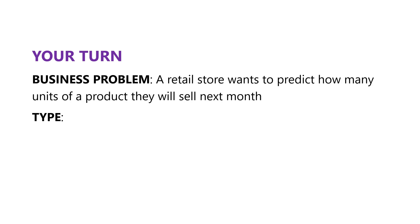Next example: a retail store wants to predict how many units of a product they'll sell next month. What type of problem is this? This will be a regression type of problem because the output — which is product demand — is going to be a continuous numerical value. It could be 10, it could be 1000, somewhere on that range. And you're going to have historical data like time of year, promotions that were running, previous demand — all of that is labeled data that you could use to predict the demand. So supervised.